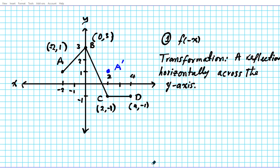A prime is going to have the coordinates positive two, comma one. Now let's take a look at point B. Point B is right on the mirror — it's on the y-axis — so when it's reflected it is reflected onto itself. Point B and point B prime are going to be identical.